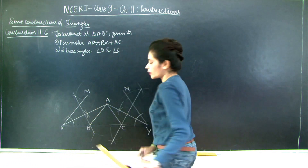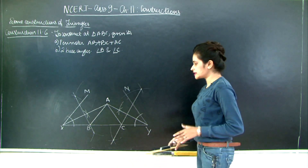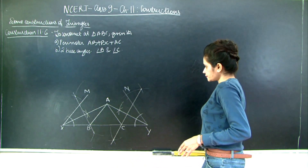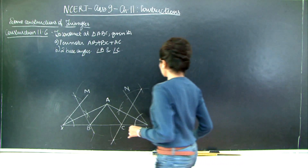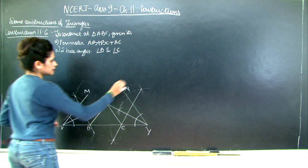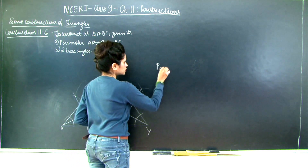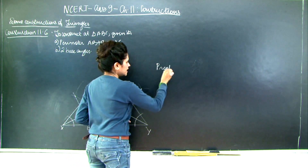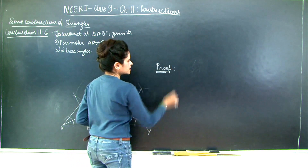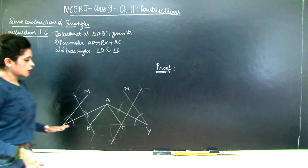My required triangle is triangle ABC. Let's see the proof first — please take note of the proof because I will have to erase this section to write the construction steps.